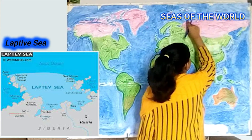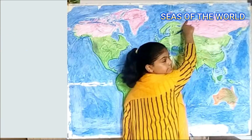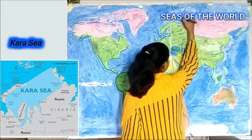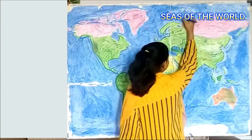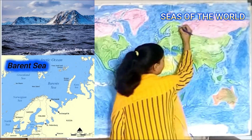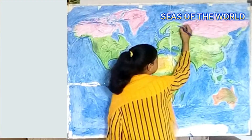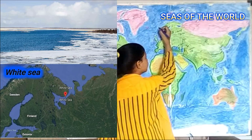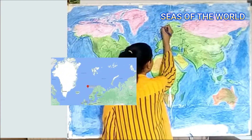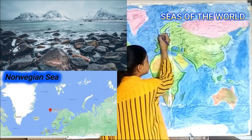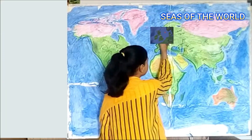Here is Tara Sea. Here is Baren Sea. White Sea. Here is Nactsey.